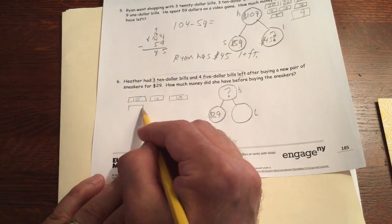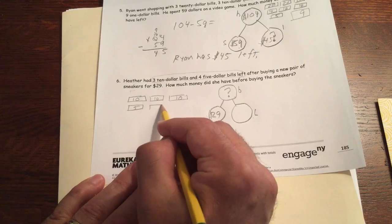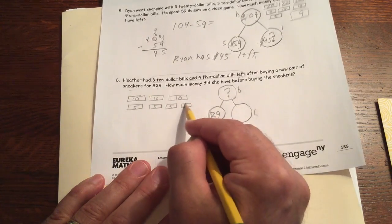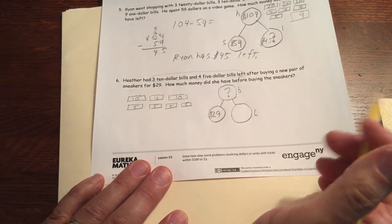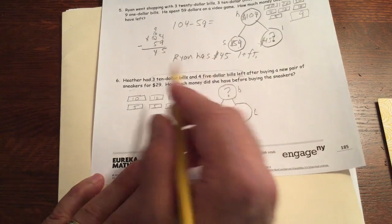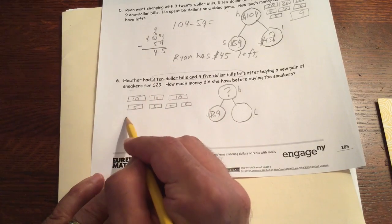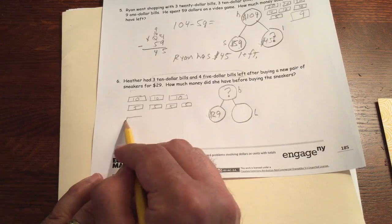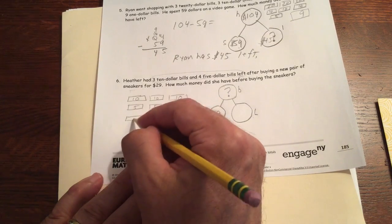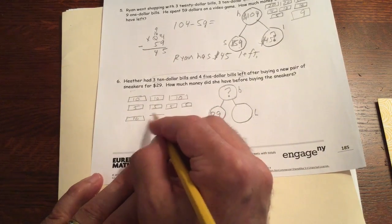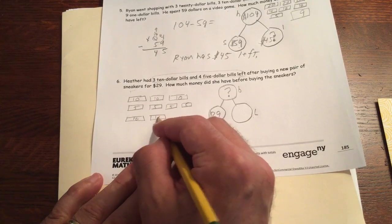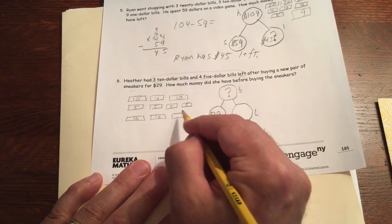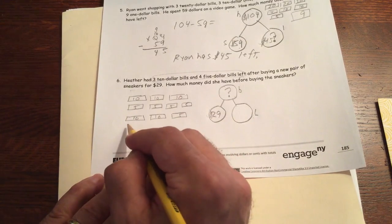Three $10s. Four $5s. After buying a new pair of sneakers for $29. So let's say the sneakers are $29. That's $29 could be two $10s for $20. And then we need nine more. We could have a five and four ones to make a nine.